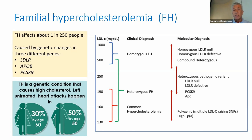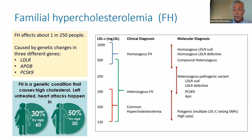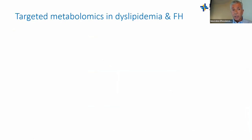Looking at LDL-C levels: common hypercholesterolemia without FH ranges from about 130 to 190 mg/dL. Heterozygous FH patients have much higher levels, and homozygous patients start above 400 and upward. Compound heterozygous patients have intermediate levels. Heterozygous FH is more common than the homozygous form.